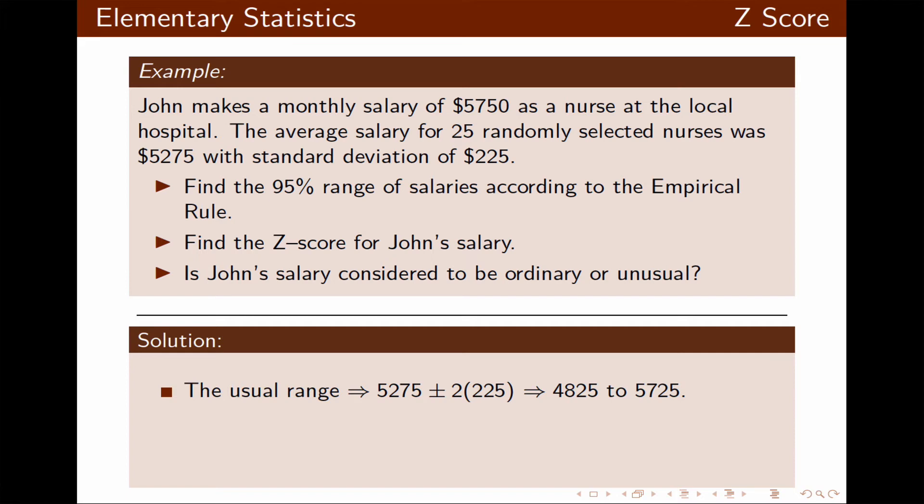Now, the z-score for John's salary will be x is $5,750, the mean is $5,275, and the standard deviation was $225. We do the calculation rounding it to three decimals, the z-score will be 2.111.